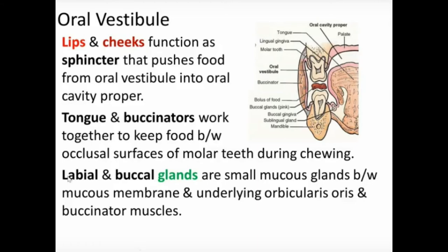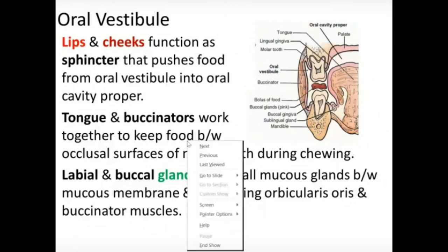The lips and cheeks function as a sphincter that pushes food from the oral vestibule into the oral cavity proper. As shown in the diagram, the buccinator muscle forms the cheek, the maxillary and mandibular teeth form the deep wall, and the slit between them is the vestibule. The oral vestibule lies between the buccinator and lips superficially, and the alveolar arches — maxillary and mandibular — deeply.